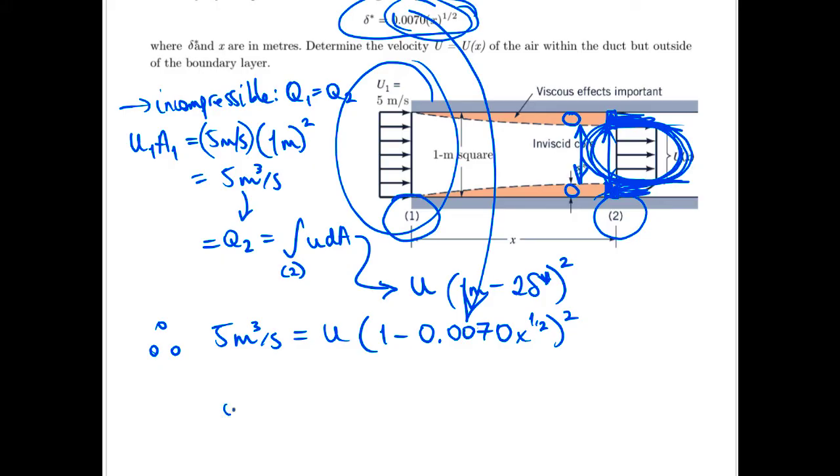So I subbed this guy in right here because we were given that. And then we just rearrange so we can say or U equals five meters cubed per second over one minus 0.0070 x to the half, all of that squared.